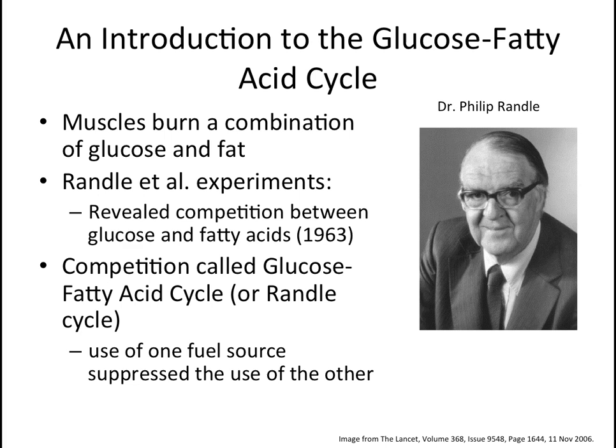Muscles burn a combination of glucose and fat for energy. What fuel they burn is dependent upon what is available and the energy demand. During low-level activities, muscles rely upon fat for fuel. When the demand for energy increases, as during aerobic or anaerobic activity like sprinting, muscles shift to breaking down carbohydrates for fuel. In 1963, Philip Randall and colleagues showed that there was a competition between glucose and fatty acids in isolated rat cardiac muscle. This competition in fuel selection was called the glucose fatty acid cycle, or Randall cycle, because the use of one fuel source suppresses the use of the other. Glucose utilization suppresses fatty acid oxidation and promotes glucose and fat storage, while fatty acid utilization suppresses glucose oxidation and the storage of glycogen.